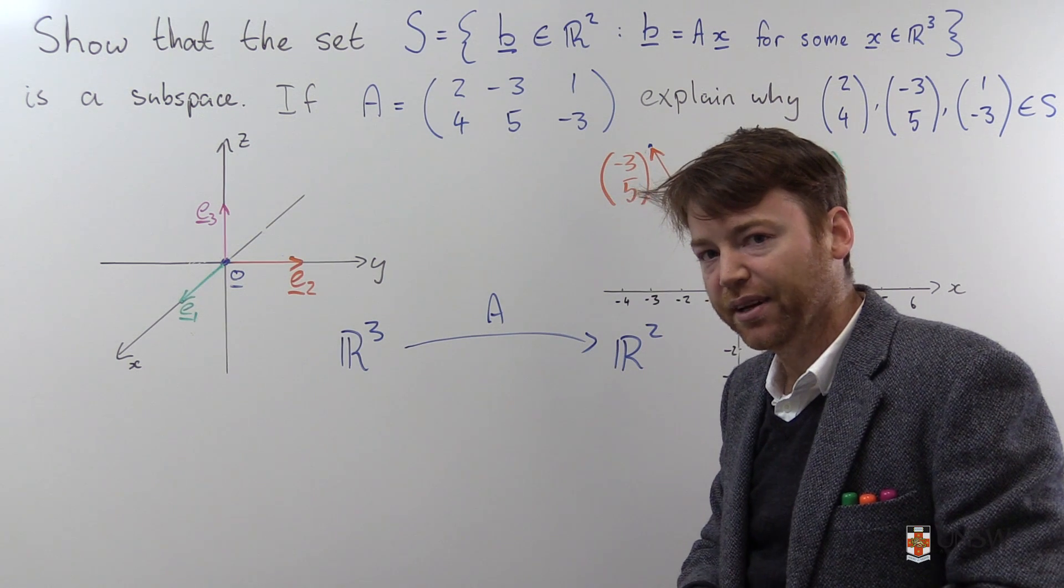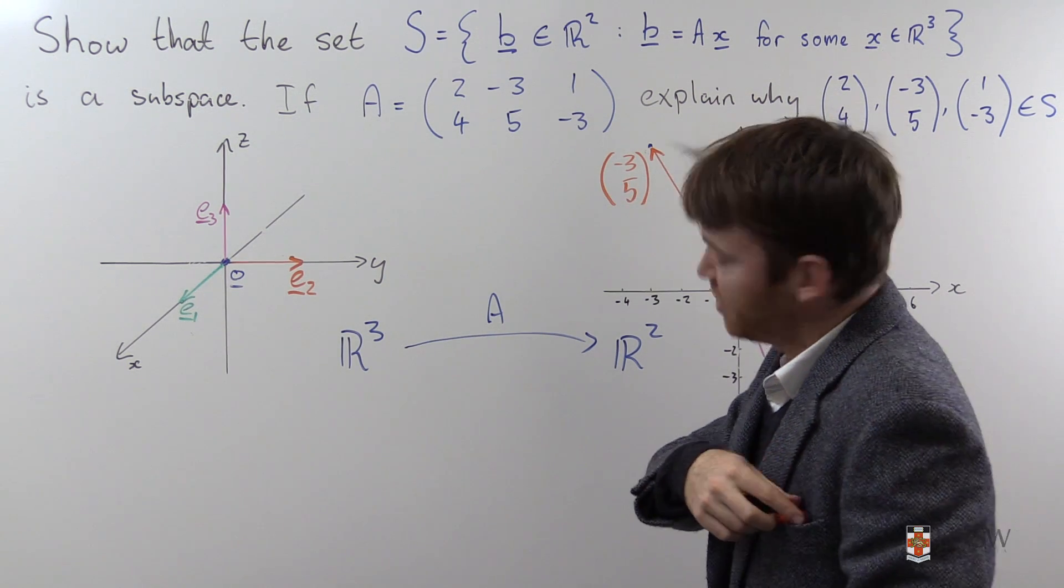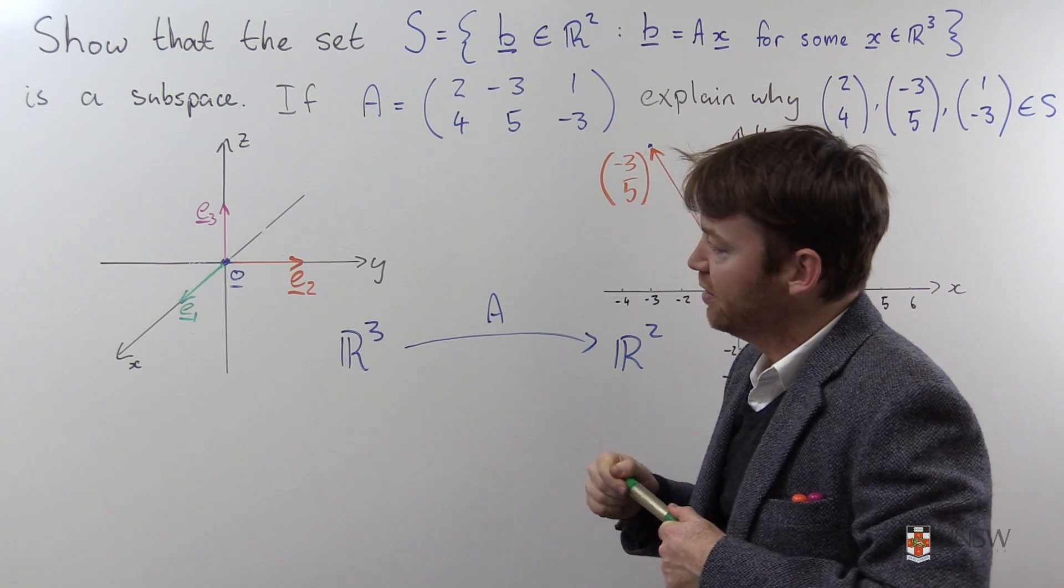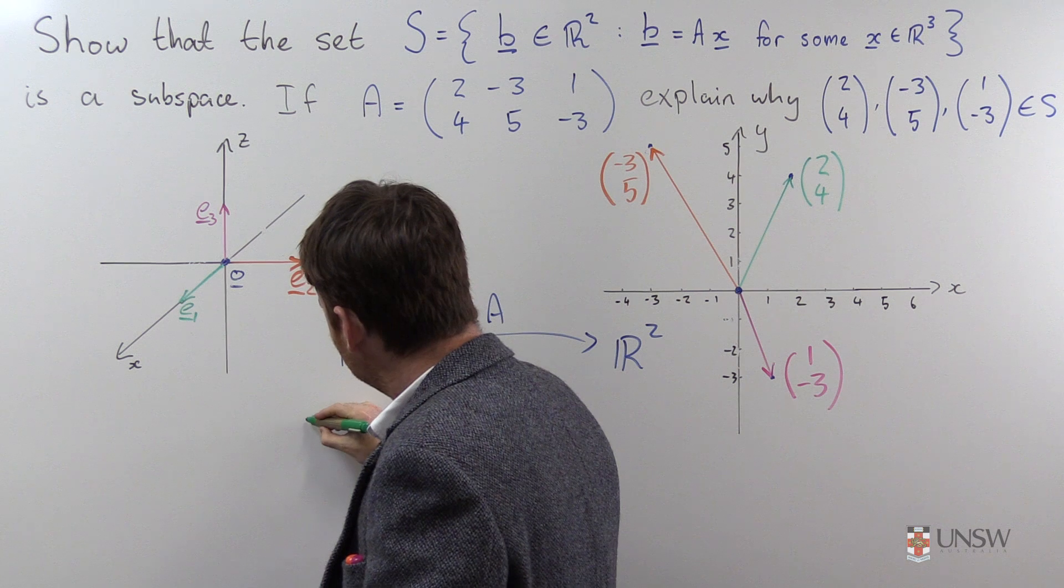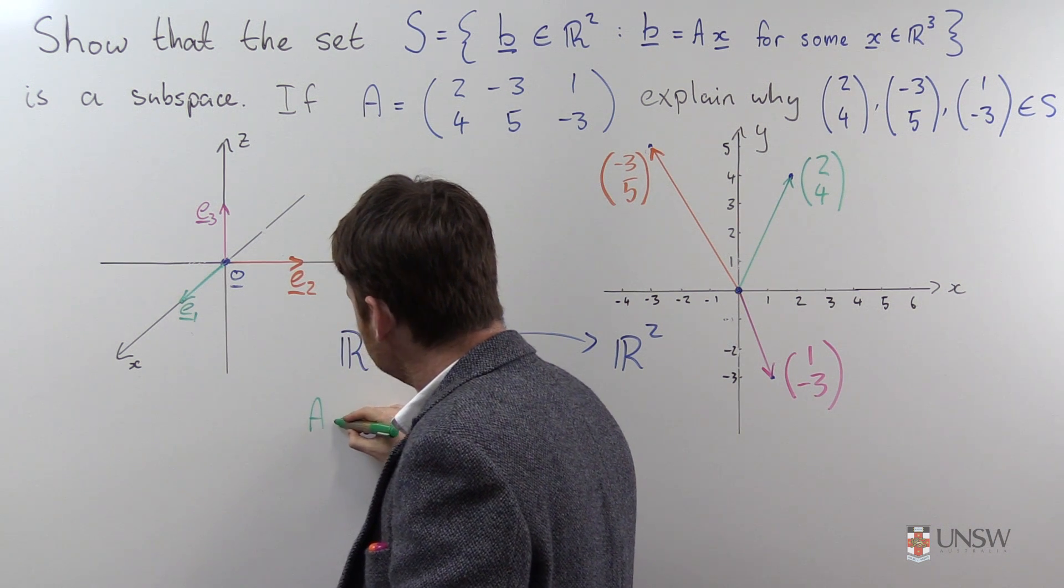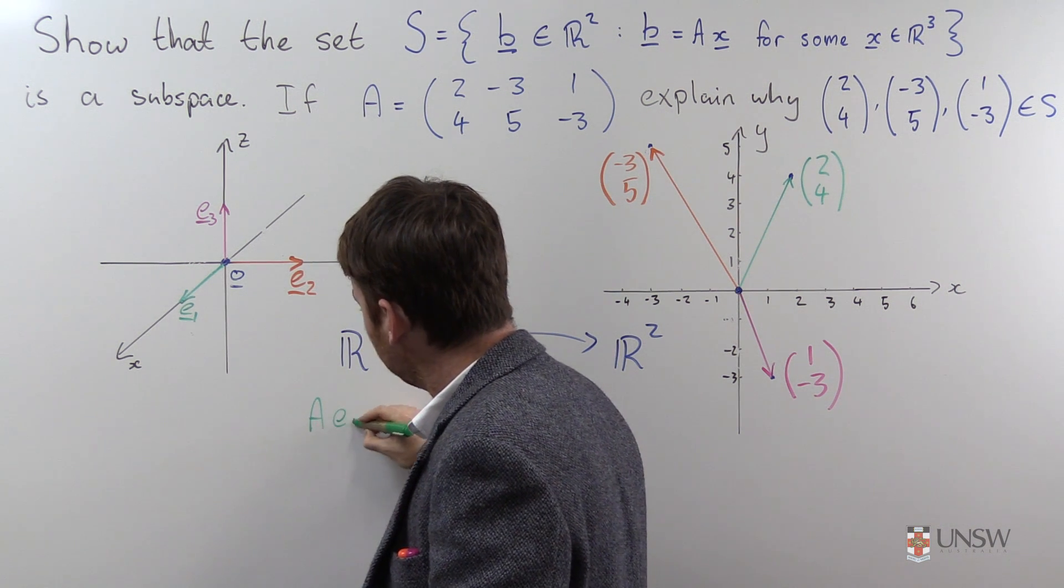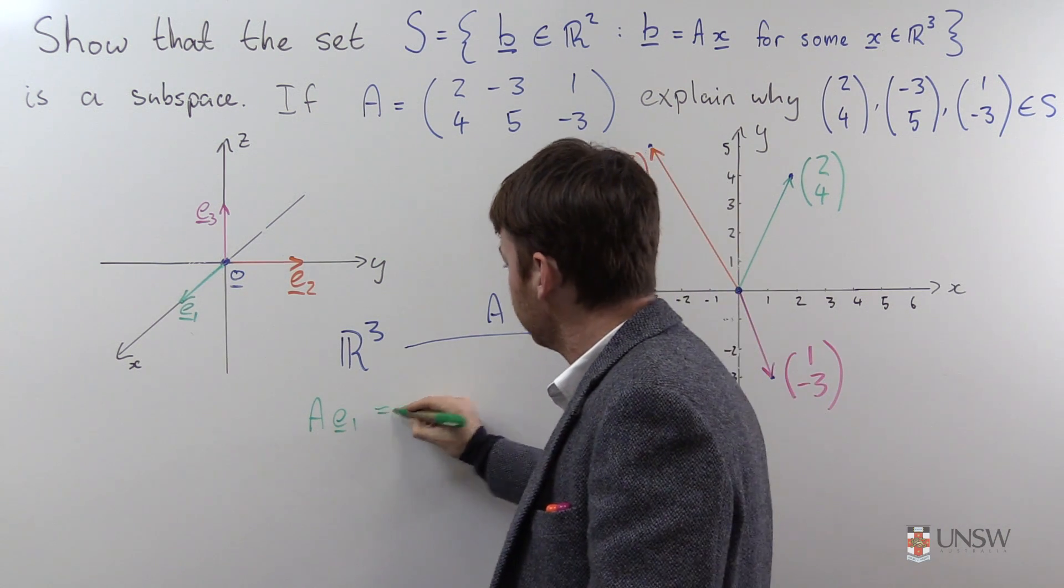Let's see what the matrix A does to some of the standard basis vectors. In particular, what does A do to E1?